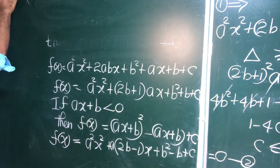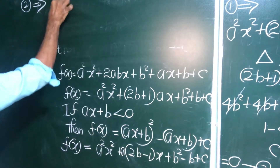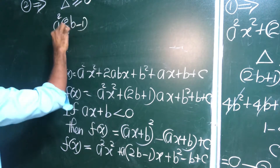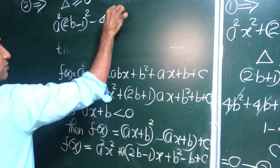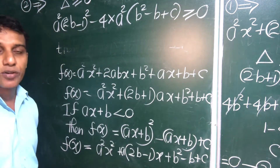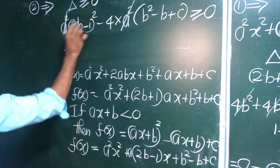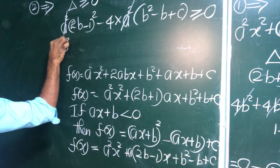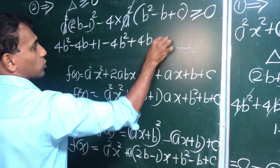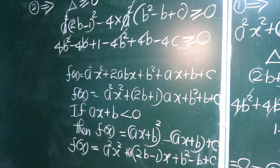For the second equation, delta ≥ 0 as well. The discriminant is (2b−1) squared · a squared minus 4·a squared·(b squared − b + c) ≥ 0. Expanding: 4b squared − 4b + 1 minus 4b squared + 4b minus 4c ≥ 0.